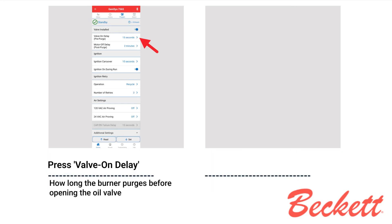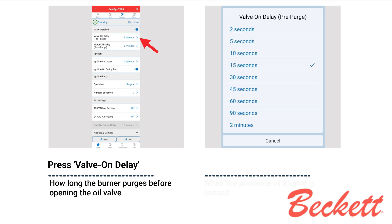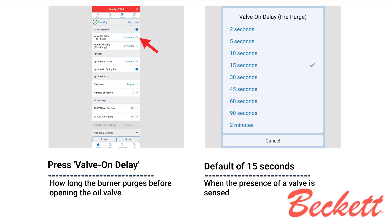Press Valve On Delay or Pre-Purge to set how long the burner purges before opening the oil valve. This setting will default to 15 seconds when the presence of an oil valve is sensed. You can select anywhere from 2 seconds up to 2 minutes. 15 seconds is typical.